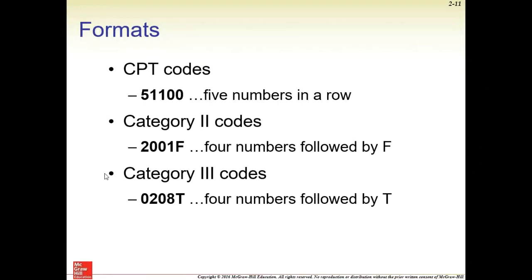Here are some examples of codes in the different formats of CPT. If we look up the first code, 51100, it's just like our ICD-10 book — we look at the top of the page. Let's look up code 51100. Your page numbers and ranges are listed at the very top of the page. We look up different key terms in the index, which gives us specific codes we then verify. Code 51100 is an aspiration of a bladder by needle.